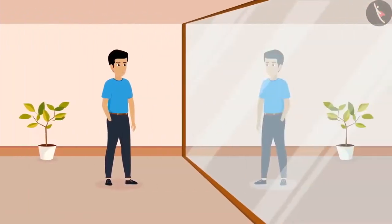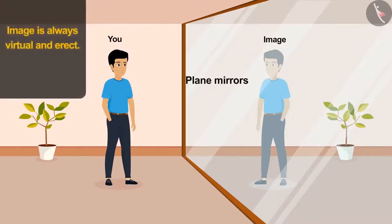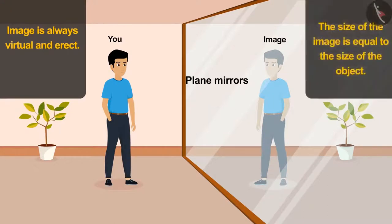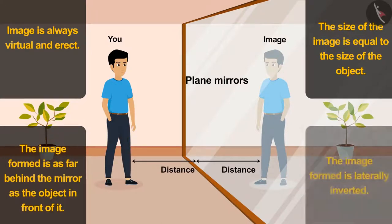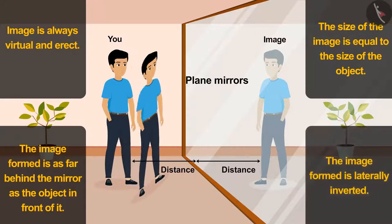Along with that, we are also familiar with the properties of the image formed by plane mirrors. Number 1: The image formed by the plane mirror is always virtual and erect. Number 2: The size of the image formed is always equal to the size of the object. Number 3: The image formed is as far behind the mirror as the object in front of it. Number 4: The image formed is laterally inverted.